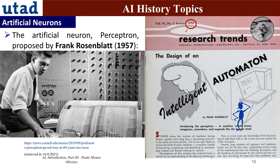You can see in research trends from Cornell the title was 'The Design of an Intelligent Automaton' by Frank Rosenblatt. One of the first titles introduces the perceptron as a machine which senses, recognizes, remembers and responds like the human mind. These researchers were really brilliant, and in 1958 they were already trying to invent things that we still tackle nowadays. Some of the machines he proposed have a very interesting shape.